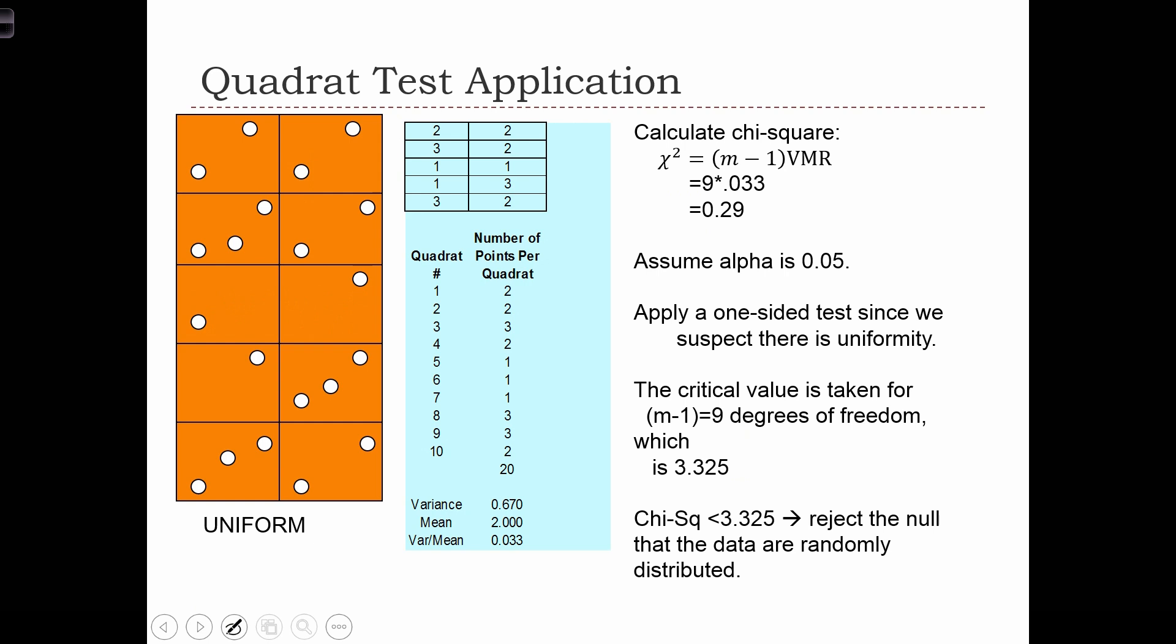Here's the uniform case. I changed it ever so slightly. I moved a couple points around just because I wanted to have a non-zero VMR. So the variance now is 0.67, and the VMR is almost 0, but it's 0.033.